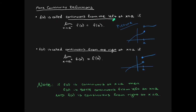A function is called continuous from the left if the height the function approaches from the left equals f of a, but not from the right — there's a jump. A function is called continuous from the right at x equals a if the height approaching from the right is the same as f of a. In order to be fully continuous, you would be both continuous from the left and continuous from the right.